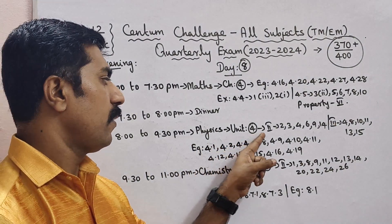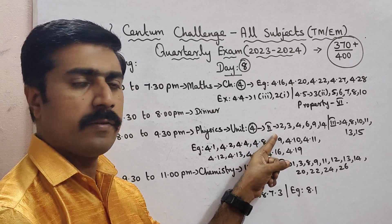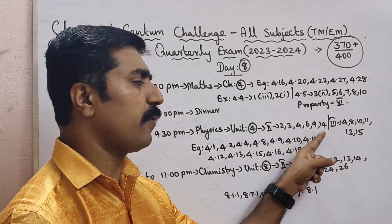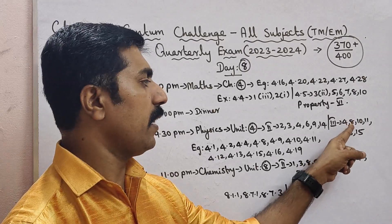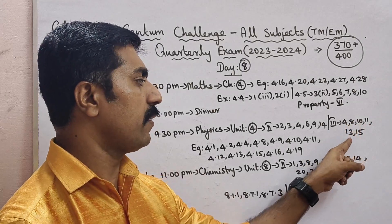Unit 4, Roman numeral 2 book back questions 2, 3, 4, 6, 9, 14. Roman numeral 3 book back questions 4, 8, 10, 11, 39, 15.